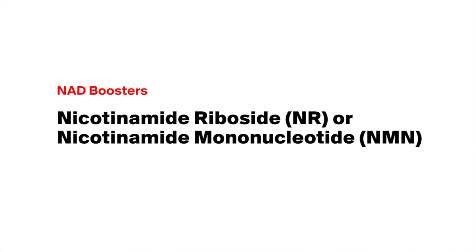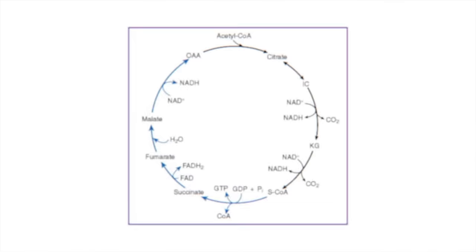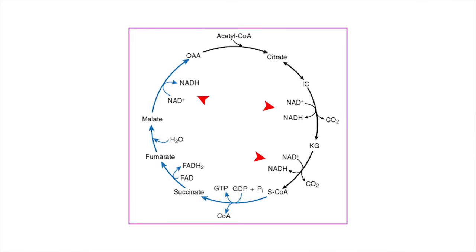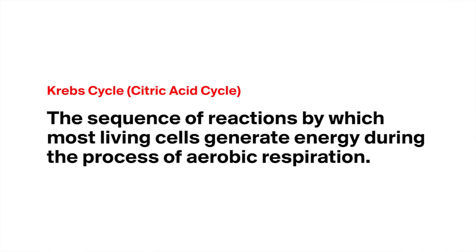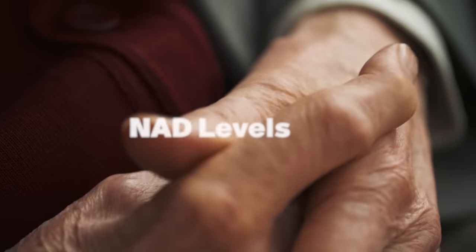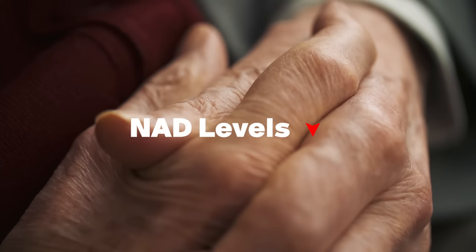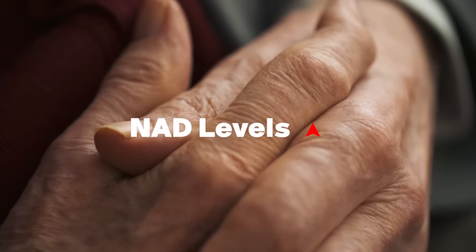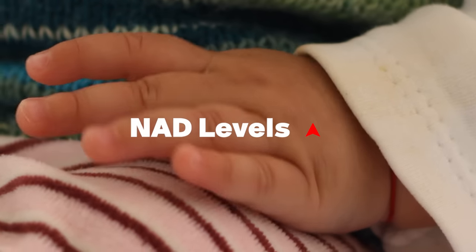NAD boosters: you might have heard of things like nicotinamide riboside (NR) or NMN, nicotinamide mononucleotide. These are all precursors that turn into NAD. NAD is an important part of the Krebs cycle — the process conducted in the mitochondria that makes ATP. To make ATP, which is the energy currency of life and of cells, you need NAD. NAD levels tend to decline with aging, so the theory is: if you can boost up NAD through things like NR or NMN, can you reverse some of the aspects of aging?